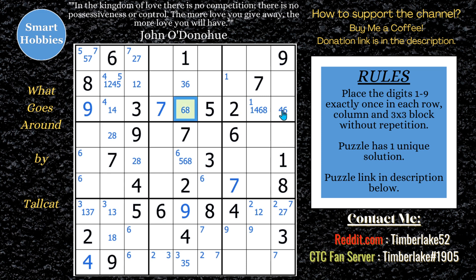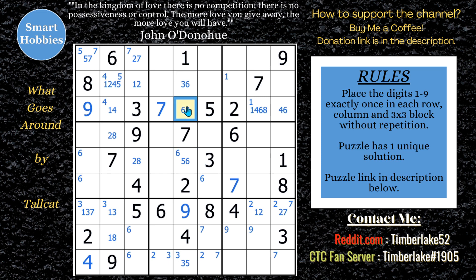If you're not familiar with XY-chains, I'll put a link to my tutorial. Starting right here: eight to six is a strong link — if this is not an eight, that's a six. A weak link means if this is an eight, this can't also be an eight. So: eight to six (strong), weak to this six, strong to the four, weak to this four, strong to the one, weak to this one, strong to the two, weak to this two, strong to the eight. Either this starting cell is an eight, or through the whole chain, that ending cell would be an eight. Either way, this cell in between cannot be an eight — we eliminate it!